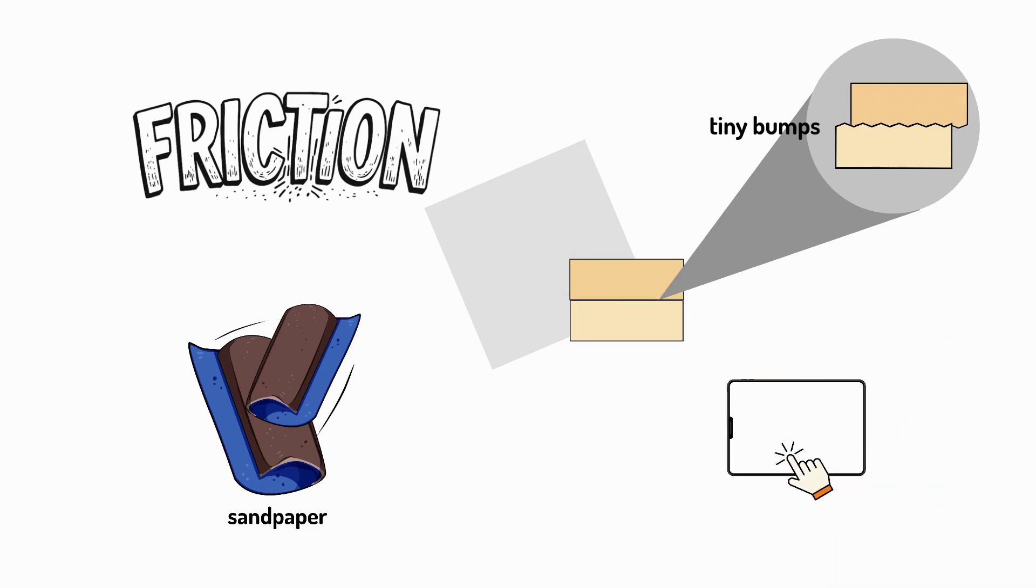So when you use a touchscreen you do need some friction so your finger doesn't just slip everywhere. But too much friction would make your finger get stuck. That's why screens are made to have just the right amount of bumpiness.